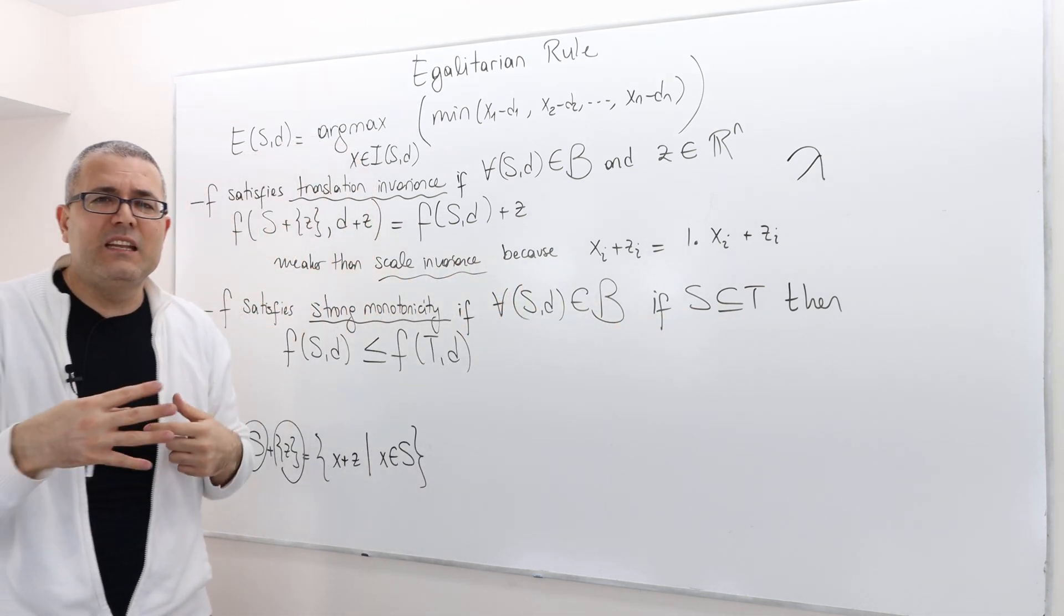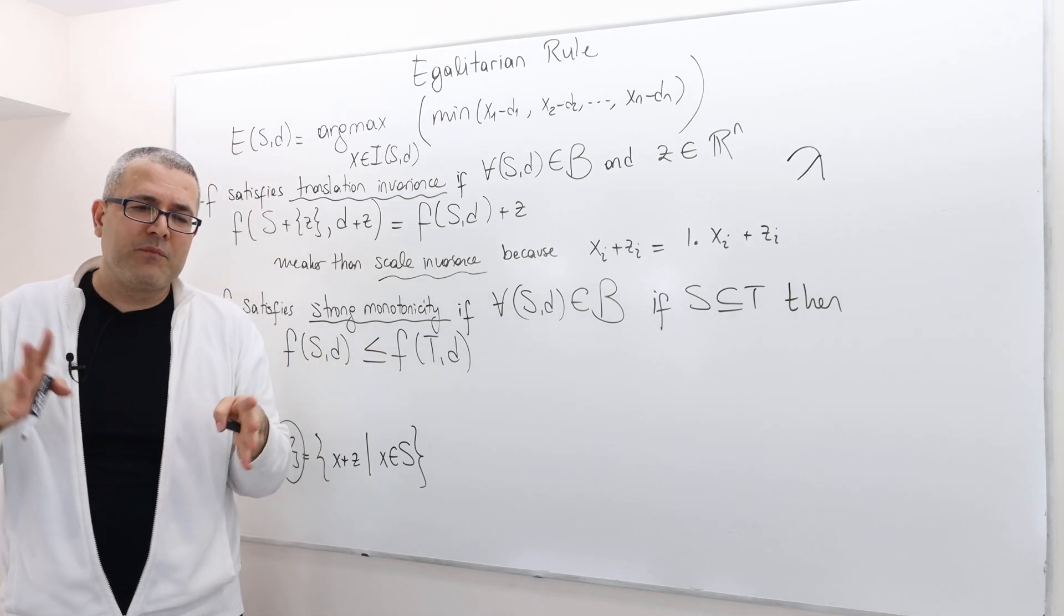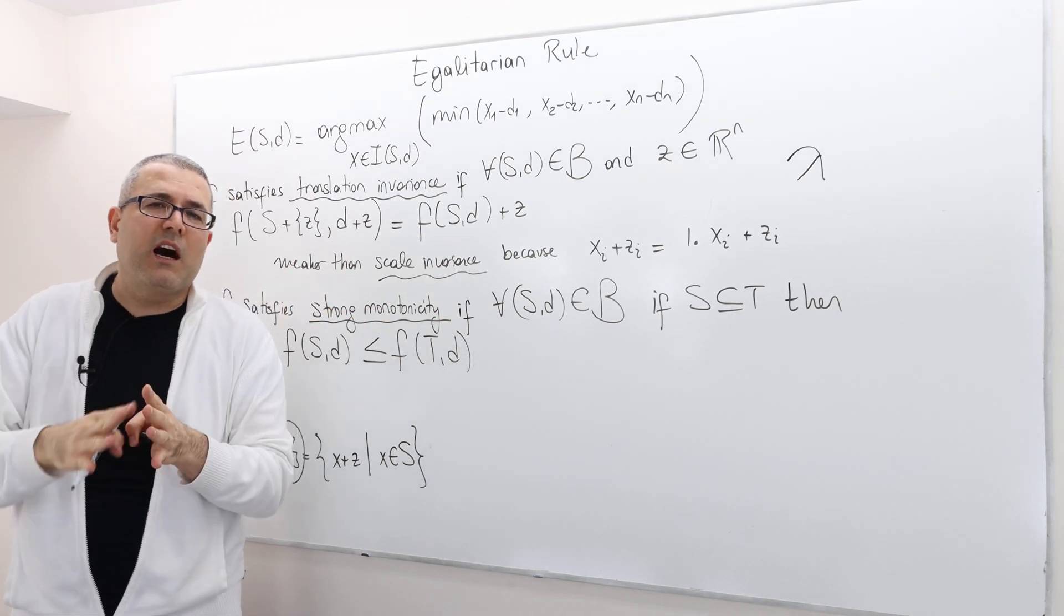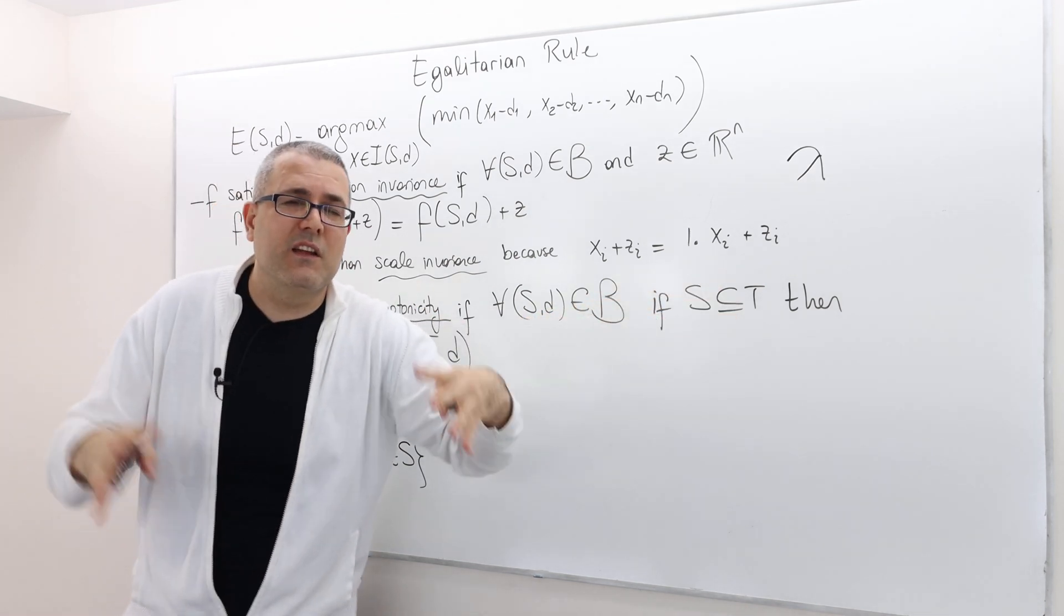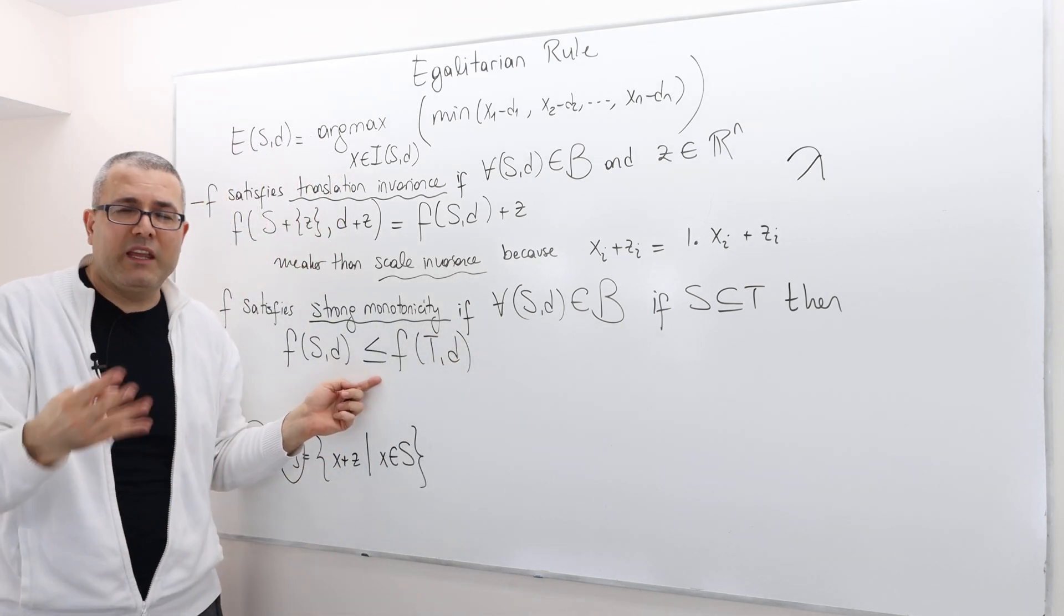Remember individual monotonicity? It was like, if the aspiration points of the other guys are the same, and if T is a larger bargaining set, then player i should get a larger share. But here...